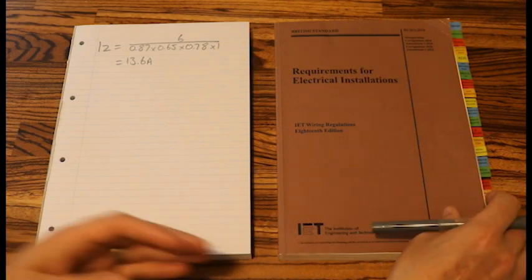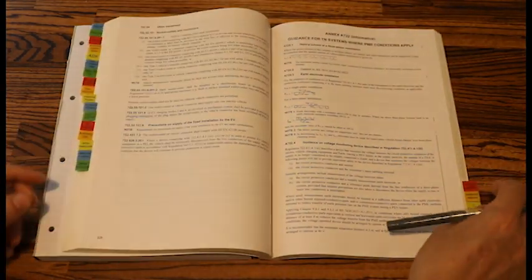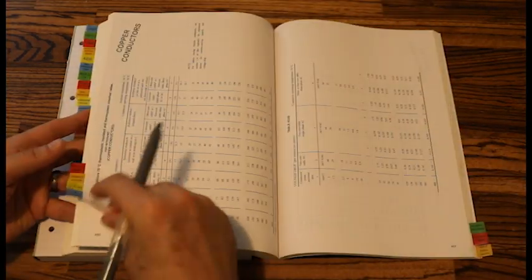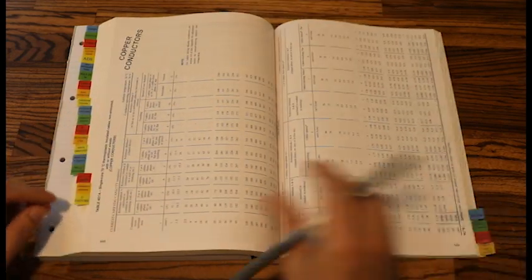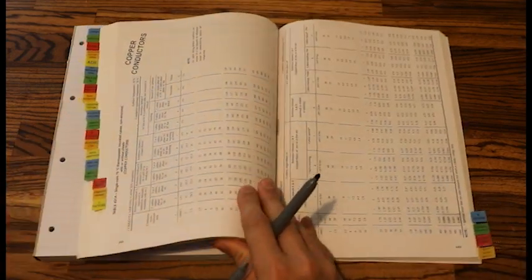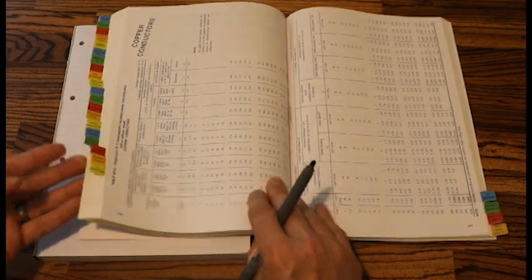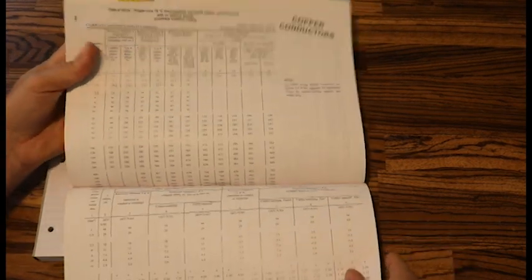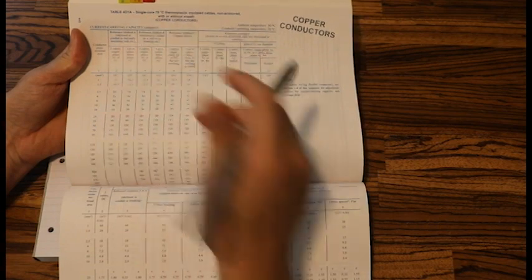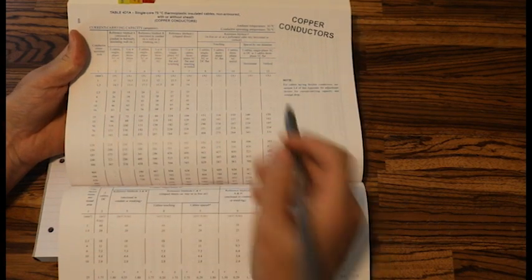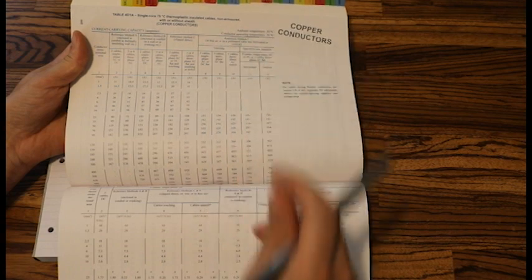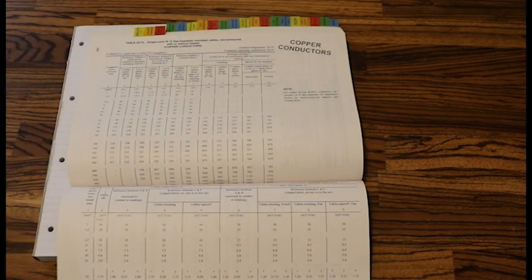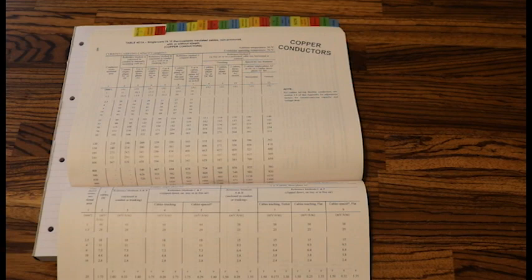So if we look at the IT tables right towards the back, take our IT tab, and they start on page 448. So it's important we choose the right table. We've got to know which table to look at. So the first one as you can see it says single core 70 degree thermoplastic insulated non-armoured. This is singles non-armoured. Our question stated that we are using singles non-armoured, so this is our correct table.